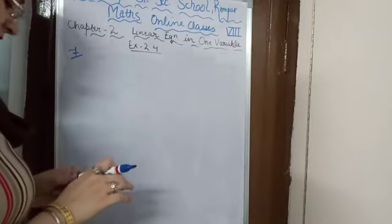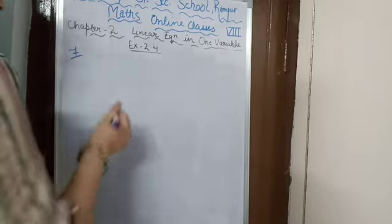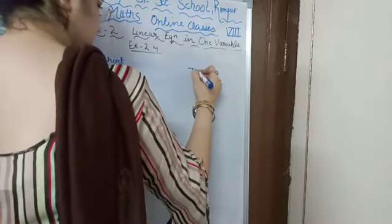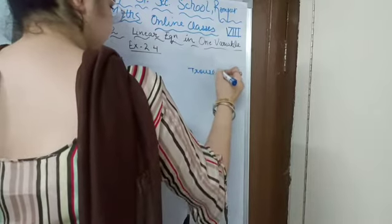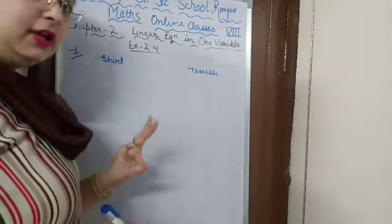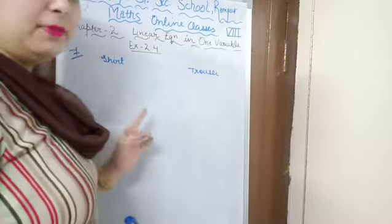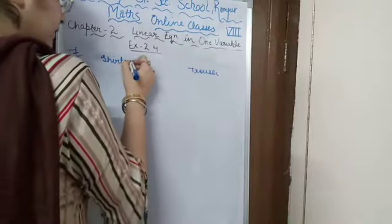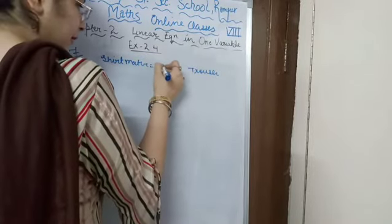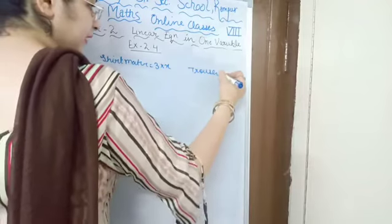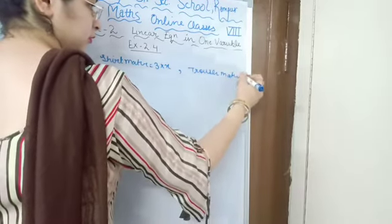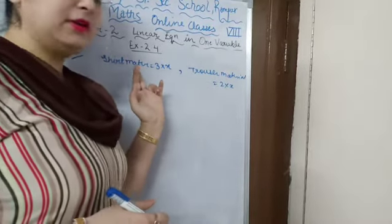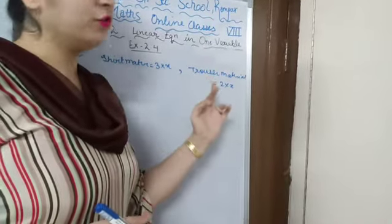This is question number 7 of Exercise 2.4. Since he buys 3 meters of shirt for every 2 meters of trouser, we let shirt material = 3X and trouser material = 2X.